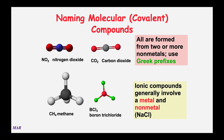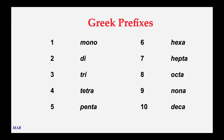You can use Greek prefixes only with non-metals. Do not use Greek prefixes if there's a metal present. Here are the Greek prefixes: mono, di, tri, tetra, penta, hexa, hepta, octa, nona, deca—we'll use those quite a bit in this section. It's going to be really important to know where things are on the periodic table, and you can always use a periodic table when studying or taking exams.